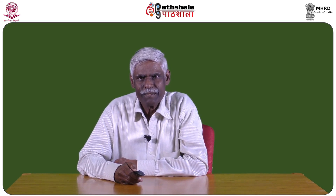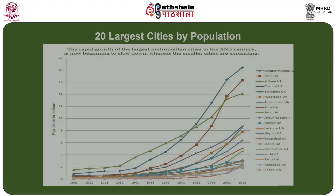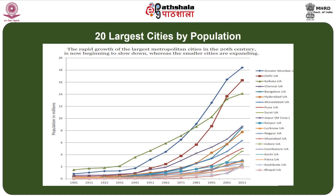The major concentration of population, especially when we talk about urbanization, shows that major metropolitan cities like Greater Mumbai, Delhi, Kolkata, and Chennai have a larger share of urban population growth, which clearly depicts the skewness that exists in urbanization in the country.